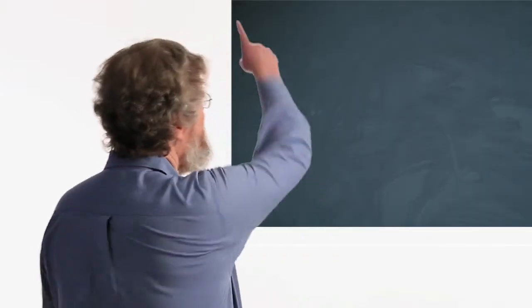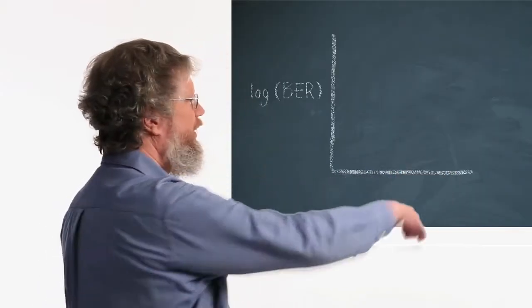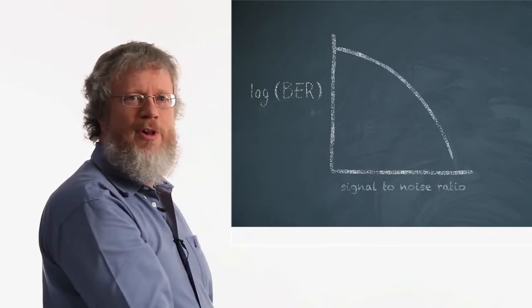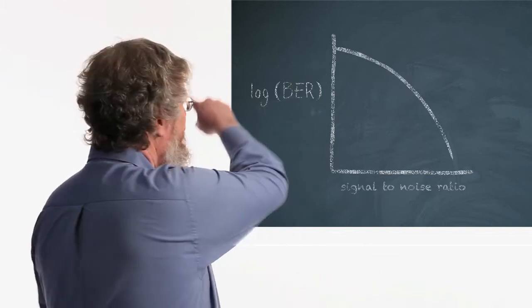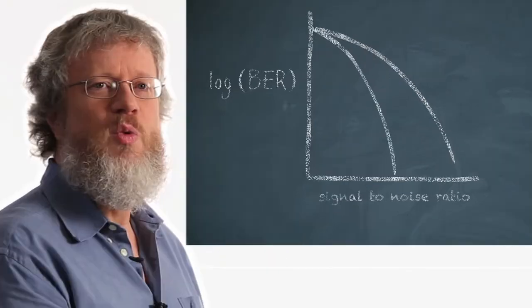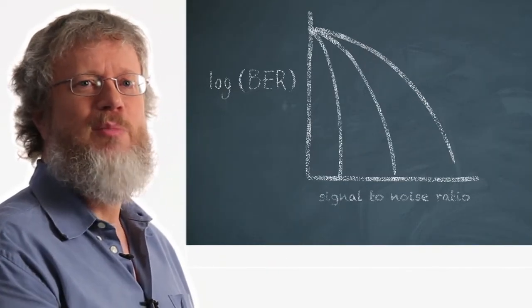Let's look at a graph of that. This is the log of the bit error rate and this is the signal to noise ratio. Without forward error correction you get a waterfall curve like this. Forward error correction allows this curve to push to the left and still achieve 10 to the minus 16. You want to push it further to the left to get more noise tolerance.